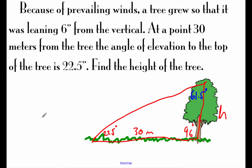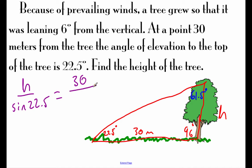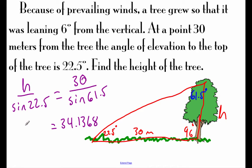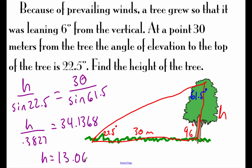Setting up the Law of Sines to find the tree height H: H over sine of 22.5 degrees equals 30 over sine of the opposite angle, 61.5 degrees. Typing the right-hand side into our calculator to four decimals gives 34.1368. The sine of 22.5 is 0.3827. Multiplying that decimal over to the right-hand side, we get the height of the tree to be about 13.06 meters.